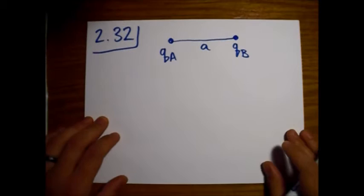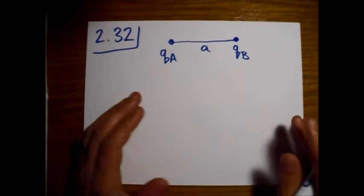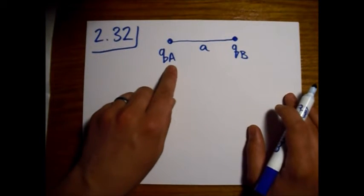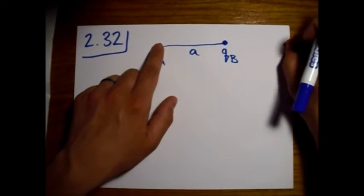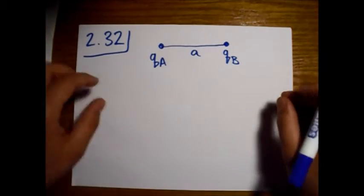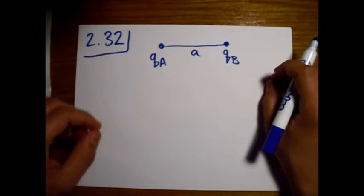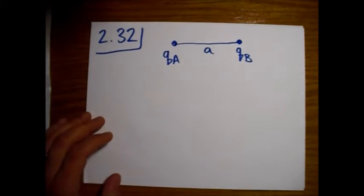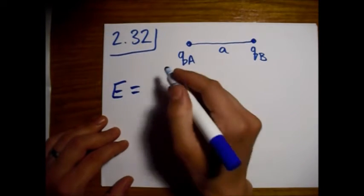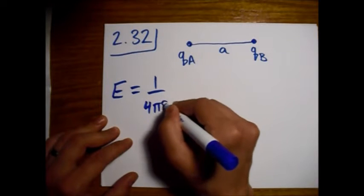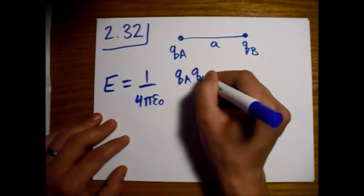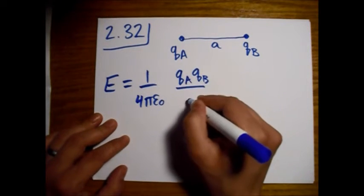The amount of energy stored in this system — we can look at the potential created by Q_A and calculate the work needed to bring Q_B in, or vice versa, and get the same answer. That answer is that the energy equals (1 / 4πε₀) times Q_A times Q_B divided by a.